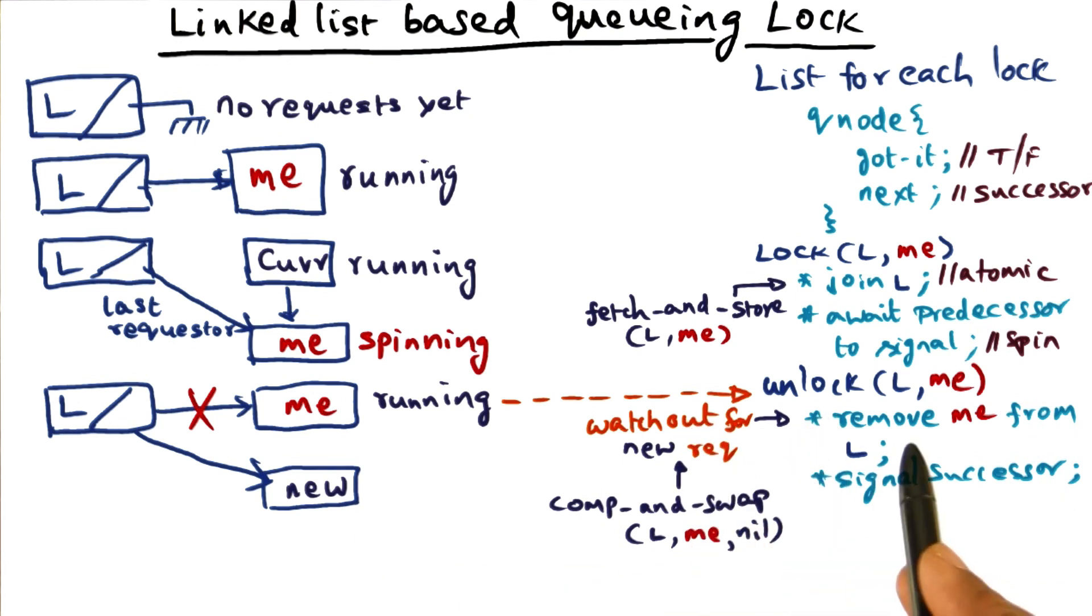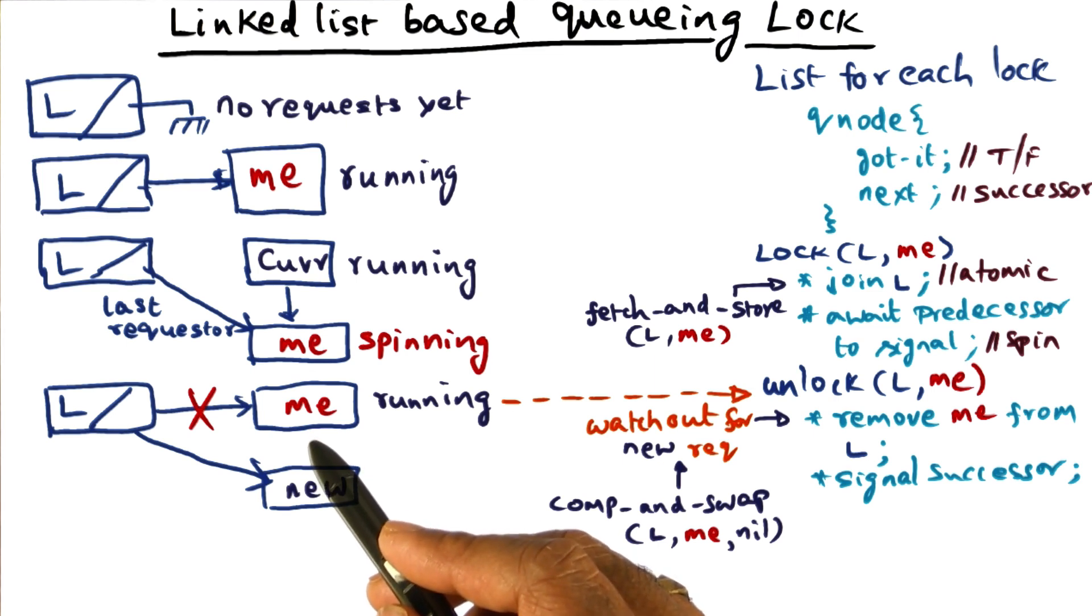So at that point I'm coming in and I'm saying, well, I want to do the unlock operation. And that's when I found that my next pointer is nil.